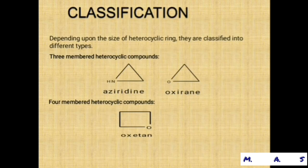Classification: depending upon the size of the heterocyclic ring, they are classified into different types. First, three-membered heterocyclic compounds — examples are aziridine and oxiridine. Aziridine is a three-membered ring with NH, containing nitrogen and hydrogen. Oxiridine contains oxygen.